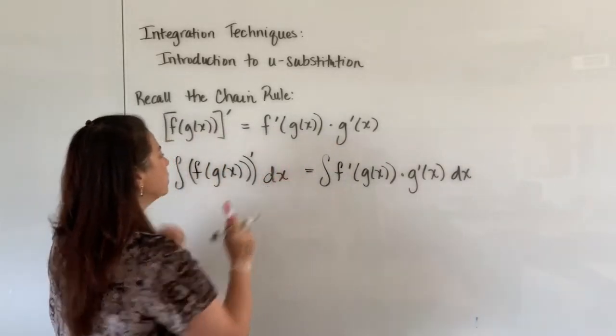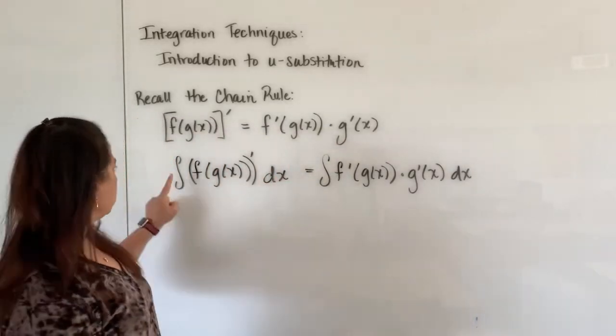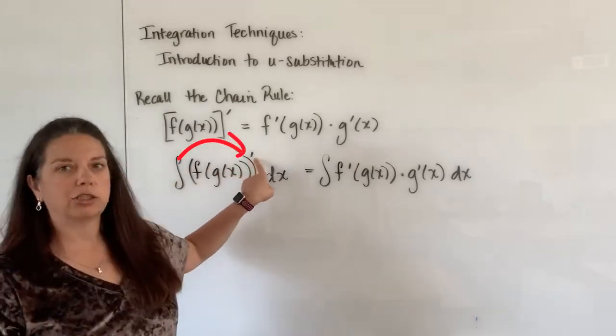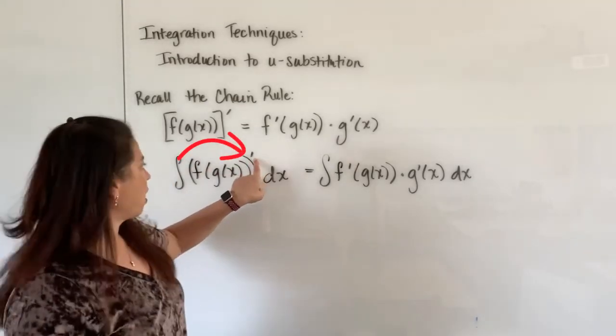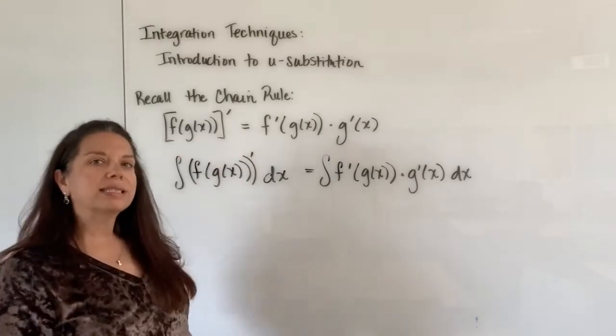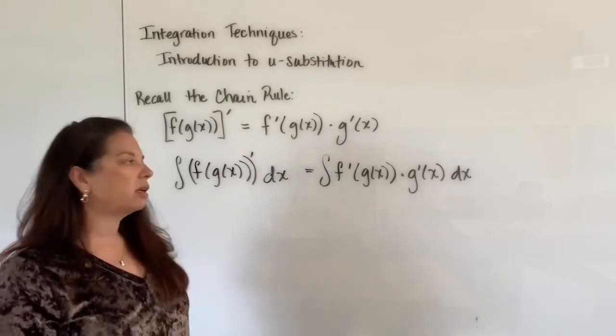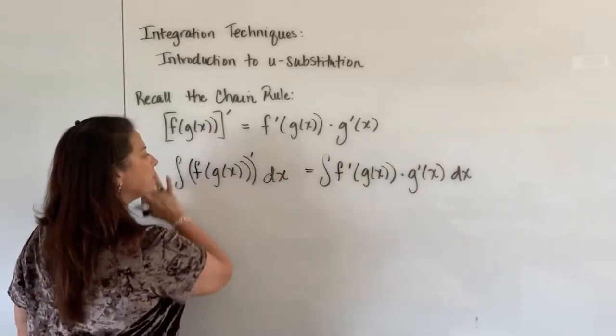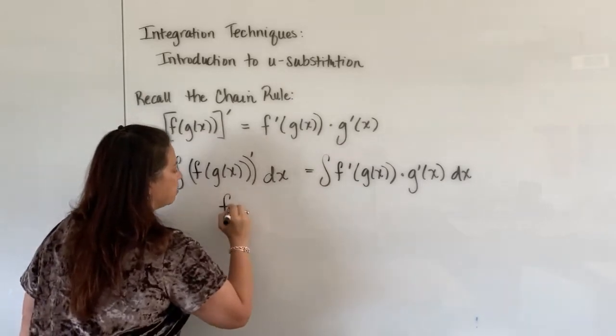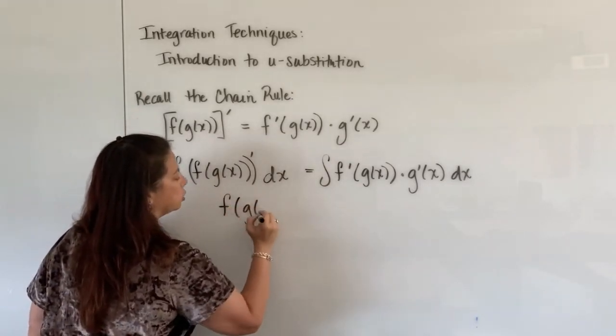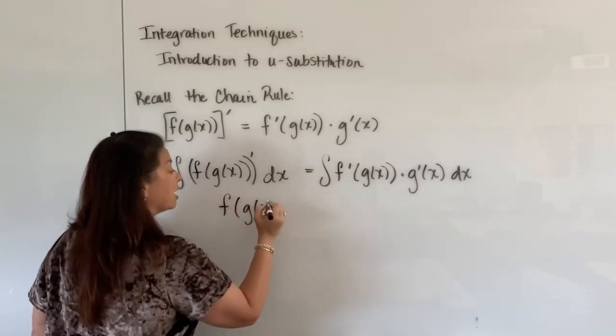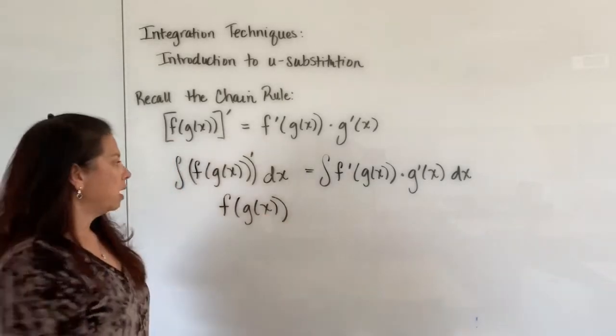Okay, if you notice here on the left hand side, when you integrate something that was initially having a derivative of what falls out for us simply is that composition function. So on the left side, what this simplifies down to is simply f of g of x. Okay. All right.